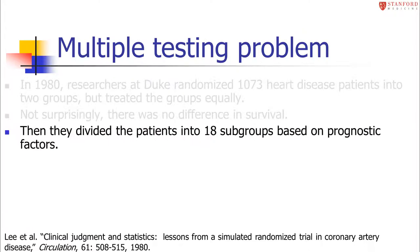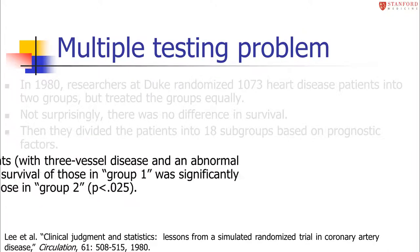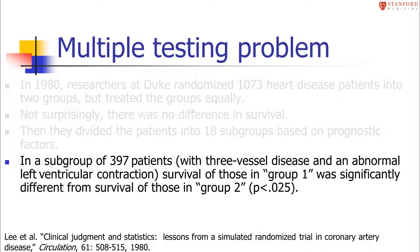But then the researchers went on and started to divide those 1,000 patients into subgroups based on prognostic factors. In a subgroup of 397 patients — those with three-vessel disease and an abnormal left ventricular contraction — they were able to find a survival difference between those randomized to group one and those randomized to group two, with a p-value less than 0.025, a statistically significant difference.